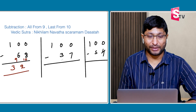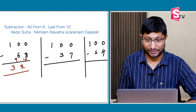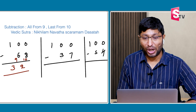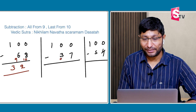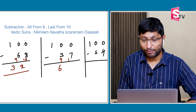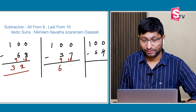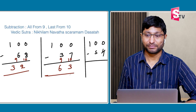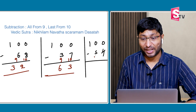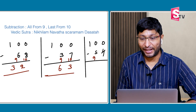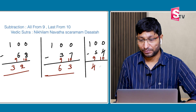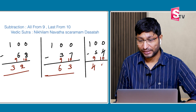All from 9, last from 10. For 100 minus 37: last from 10 — 10 minus 7 is 3. All from 9 — 9 minus 3 is 6. Answer: 63. For 100 minus 54: 9 minus 5 is 4, 10 minus 4 is 6. Answer: 46.